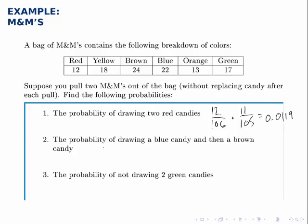The probability of drawing a blue candy and then a brown candy is the probability of drawing a blue candy, 22 out of 106, times the probability of drawing a brown candy assuming we drew a blue one the first time, assuming the first part of the experiment was successful.